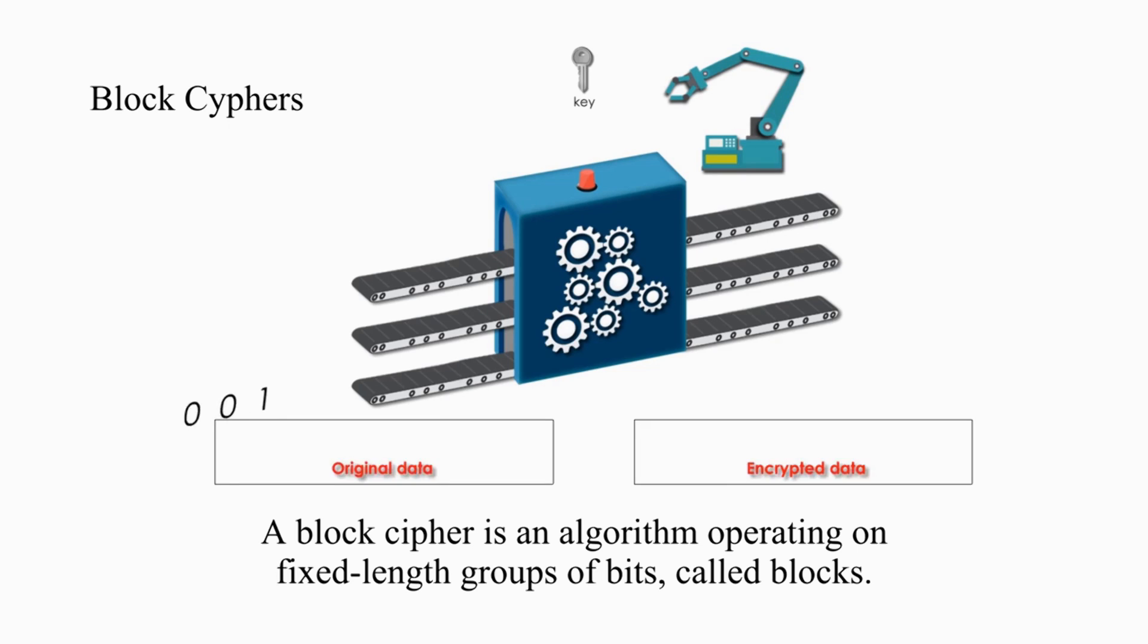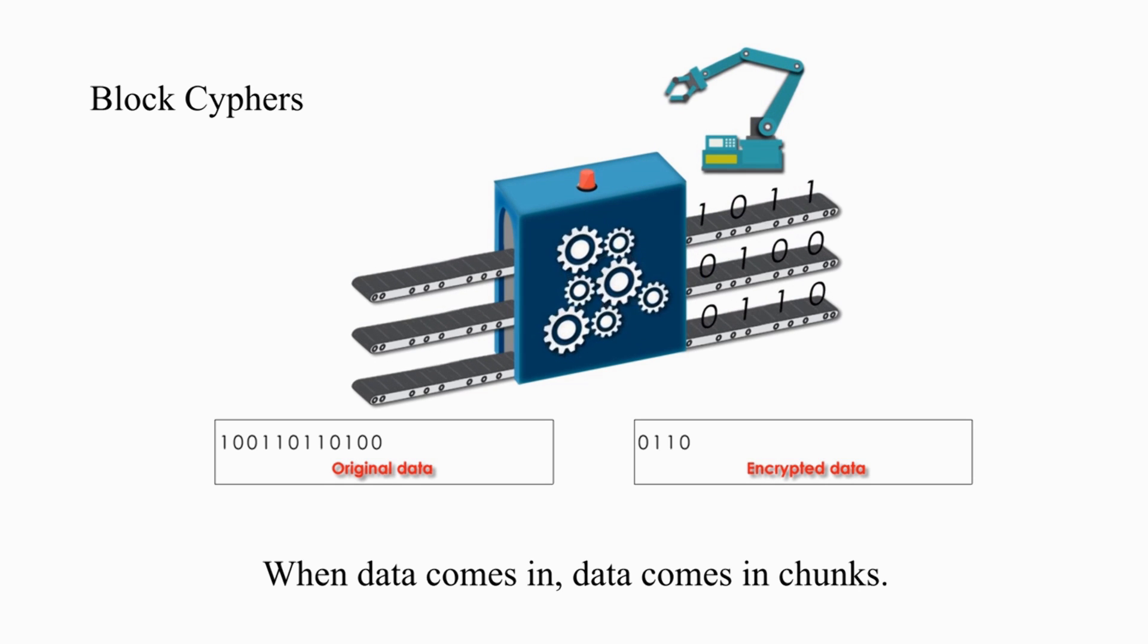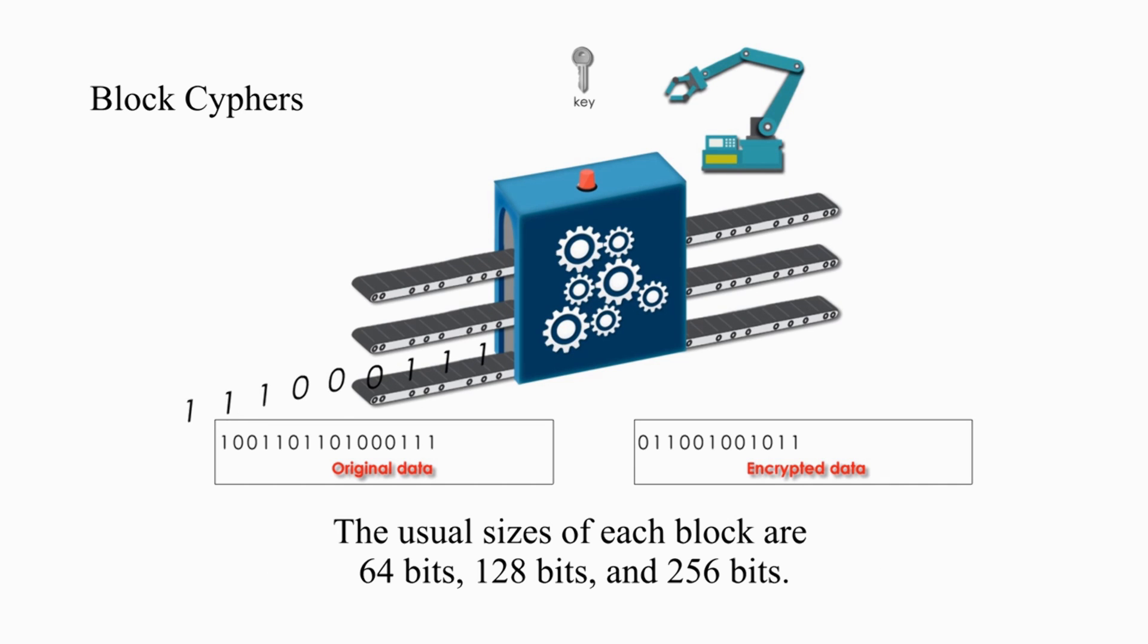A block cipher is an algorithm operating on fixed length groups of bits. It encrypts data in certain length, not bit by bit. When data comes in, data comes in chunks. The usual size of each block are 64 bits, 128 bits, and 256 bits.